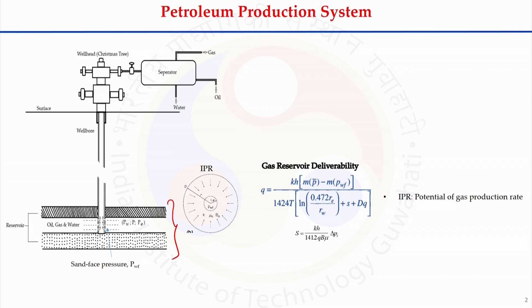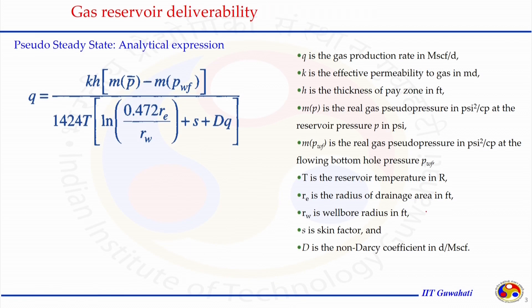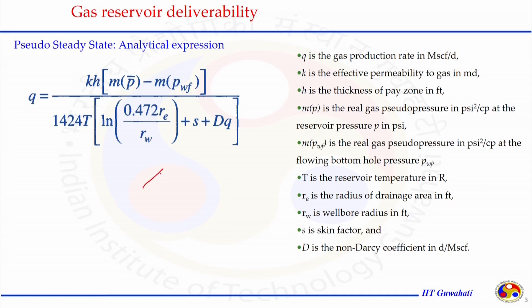In the last class we were developing the relationship using a mathematical relationship — that is, material balance — and we could establish how the flow rate is a function of pressure drawdown, that is, reservoir pressure minus well bore pressure. The well bore is also known as the sand face, and with this relationship we could understand how fluid properties and reservoir properties are accounted for in the mathematical expression.